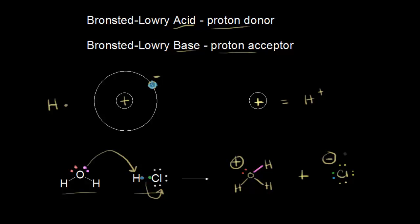Let's identify our Bronsted-Lowry acid and Bronsted-Lowry base for this reaction. H2O, the water, acted as a proton acceptor — it accepted a proton from HCl — so water is our Bronsted-Lowry base. HCl donated a proton to water, so HCl is therefore our Bronsted-Lowry acid.